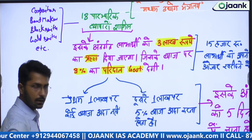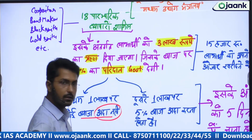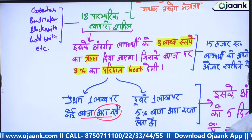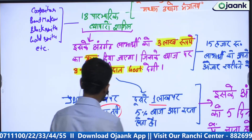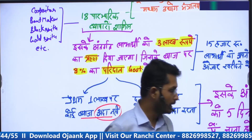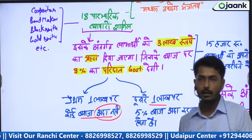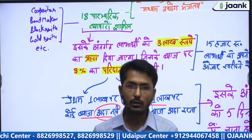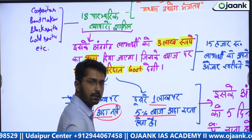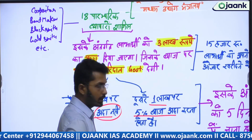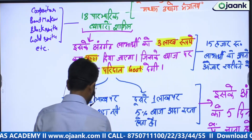First time, one lakh rupees will be given — on this first installment, no interest whatsoever will be charged. This statement is very easy to remember. No interest rate needs to be paid on this. The second one lakh rupees — we assume here that when the person invested that first one lakh, they earned something from it. So when the government gives the second one lakh, 5% interest is required to be paid on it.